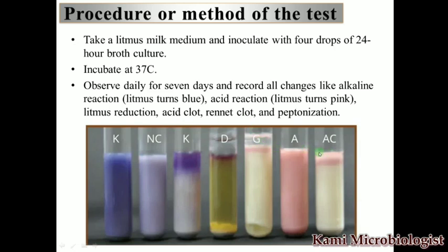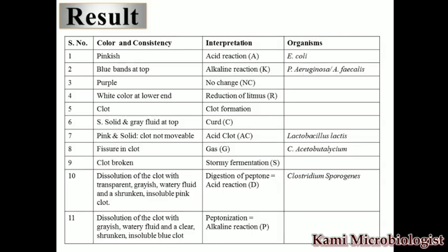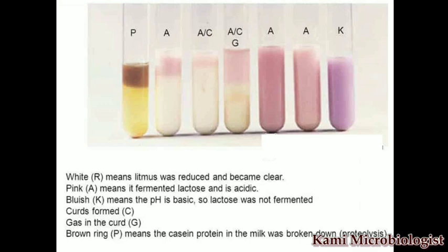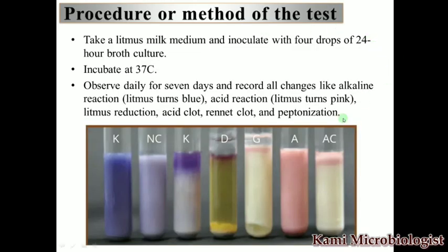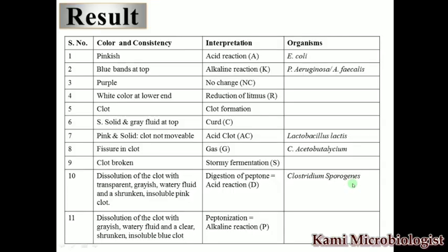When we see pink and solid — meaning the clot is not movable — that is acid clot. If we tilt the tube and it is still not moving, that confirms it is acid clot, which is a property of Lactobacillus. Fissures in the clot or gas means gas formation.